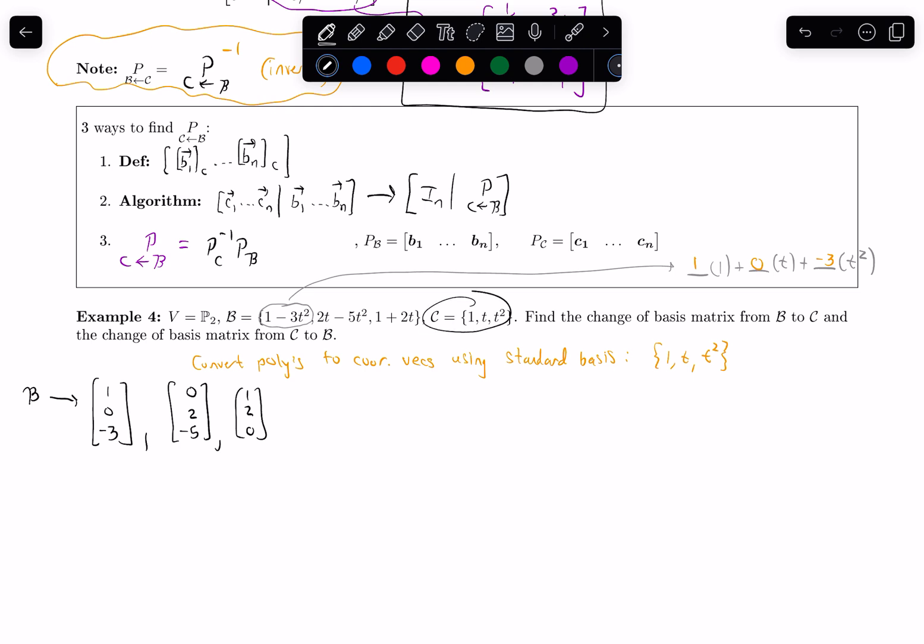So that's converting this basis B to coordinate vectors. Let's do the same thing to this basis C. Let's convert these to coordinate vectors. Then the first term, the 1 becomes a 1, 0, 0, because there's no t term, there's no t squared term, but there is a 1. For the t, I would get 0, 1, 0. Those are the coefficients. And for t squared, I get 0, 0, 1. Those are the coefficients.